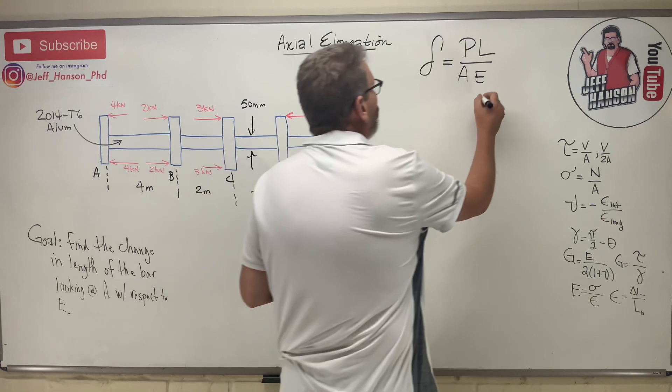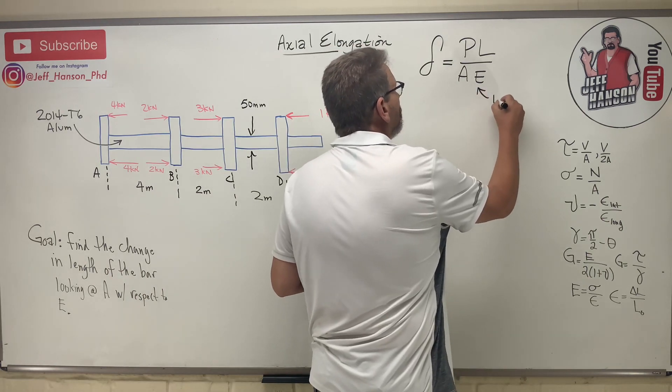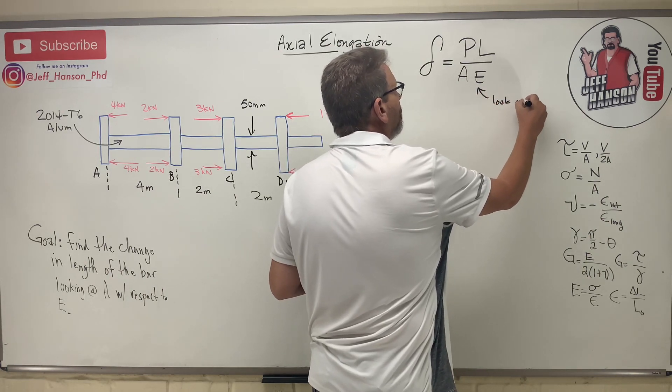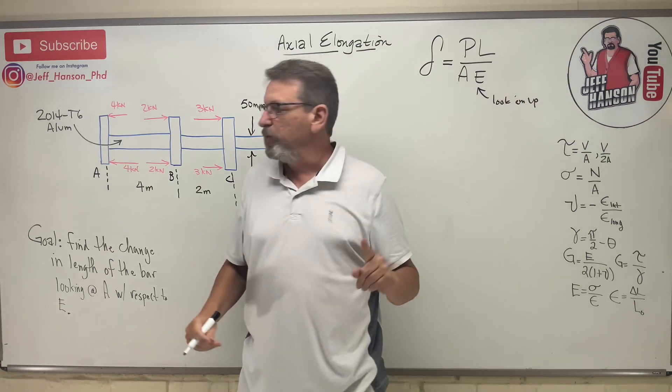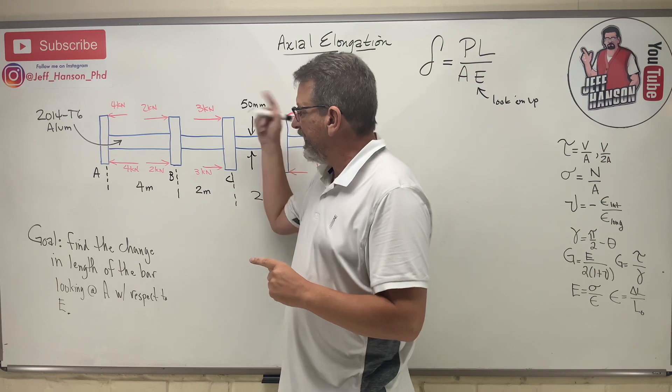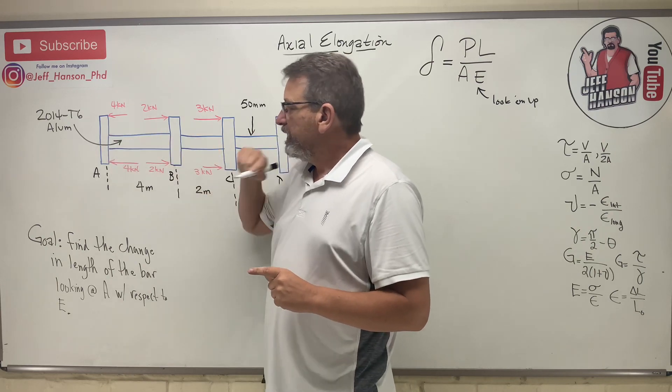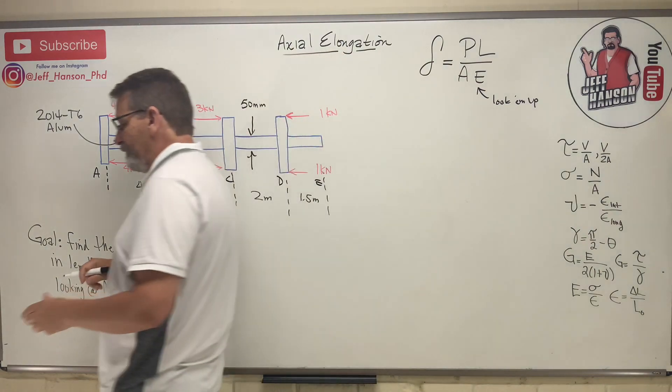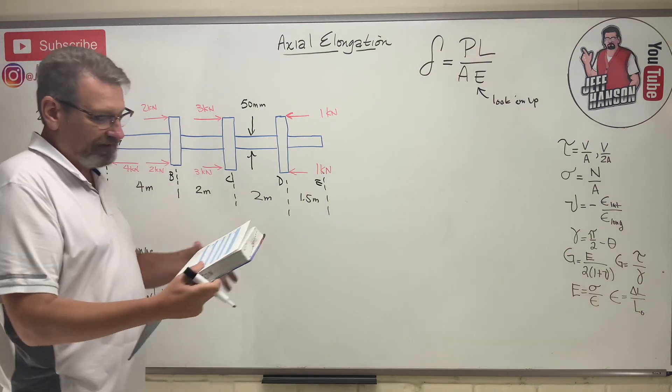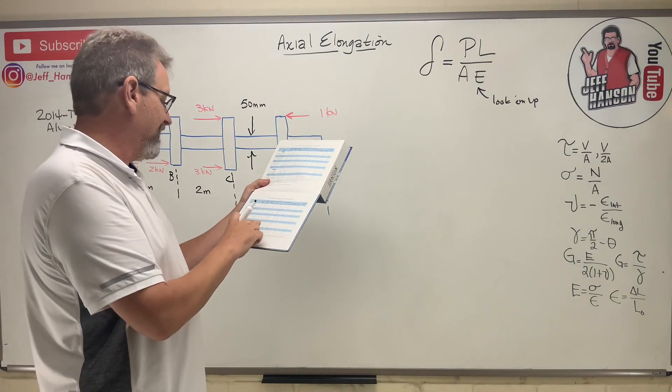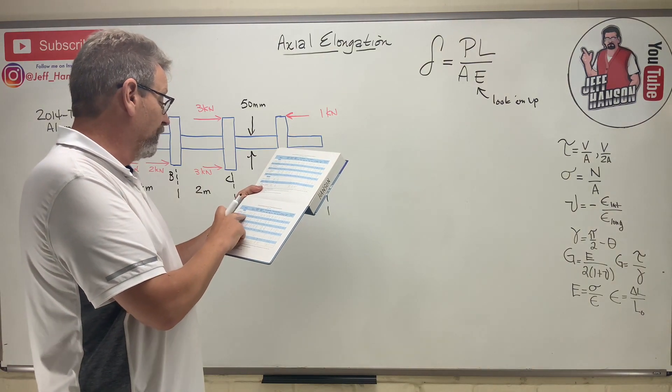For E, we can also look them up, which means if we have our book we can just look that value up if we know what kind of material this is. And we do - it's 2014-T6 aluminum.